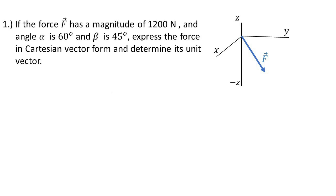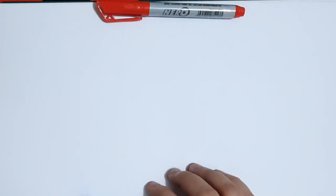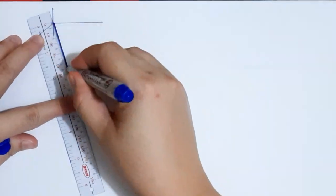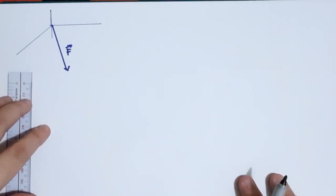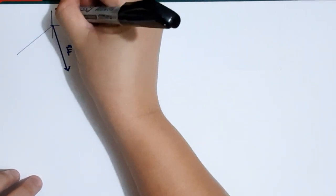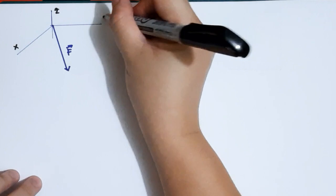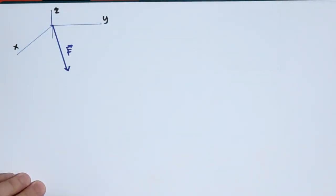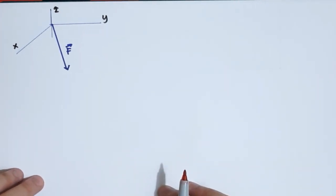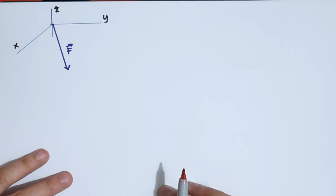We will now solve an example of a Cartesian vector problem. If a force has a magnitude of 1,200 newtons, alpha is 60 degrees, and beta is 45 degrees, express the force in Cartesian vector form and determine its unit vector. Let's draw this first. Here is our vector F, with the z-axis, positive x-axis, and positive y-axis shown.